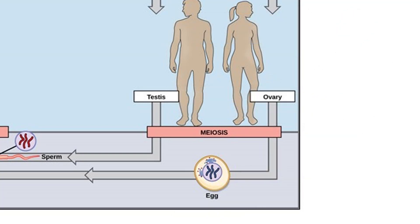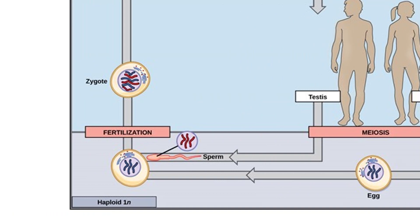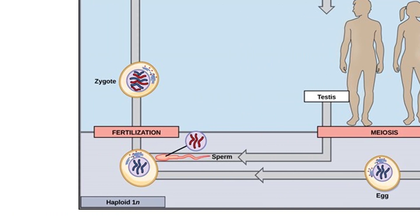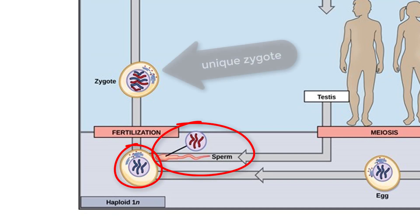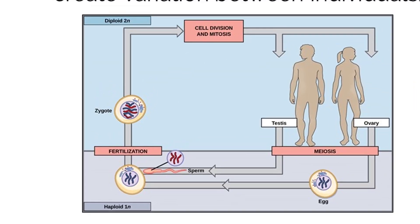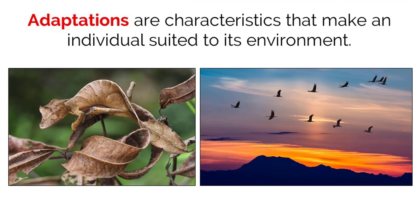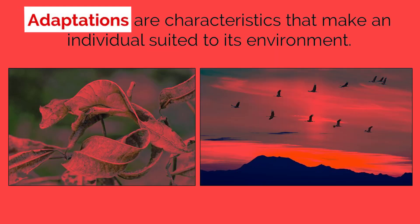Once we have unique cells from meiosis, the next form of variation occurs with sexual reproduction itself. This process entails a random sperm cell meeting with a random egg cell to fertilize a unique zygote. This randomness also produces a high amount of variation within a population's gene pool. The next requirement for evolution by natural selection to take place is the concept of adaptations.